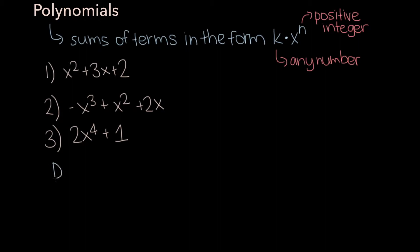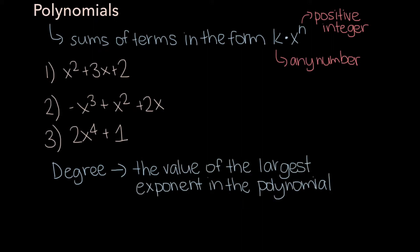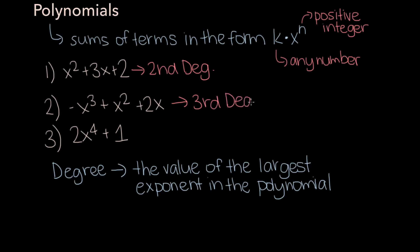Let's also define what the degree of a polynomial is. The degree of a polynomial is simply the value of the largest exponent in the polynomial. Thus, our first polynomial would be a second degree polynomial, the second one would be a third degree polynomial, and the third one would be a fourth degree polynomial.